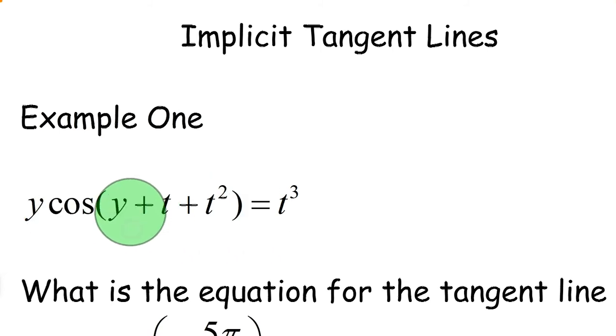Here we have y cosine of y plus t plus t squared equals t cubed. We know this is going to be implicit because within the function we have a mixture of y's and t's. So this is a function that is a mixture of two variables. And when that happens and we differentiate, we have to use implicit differentiation.